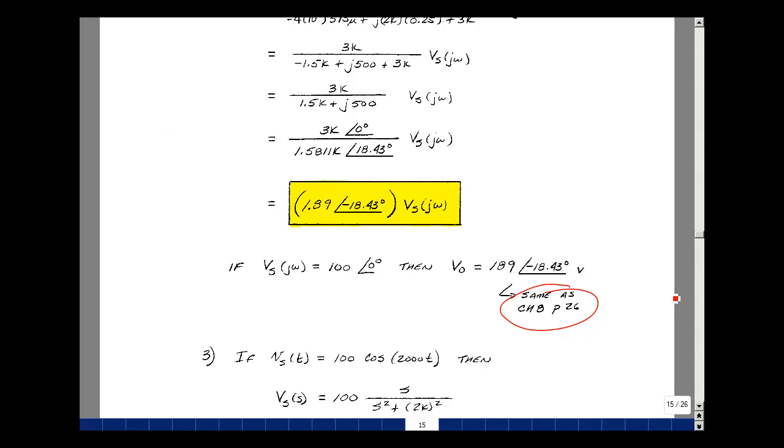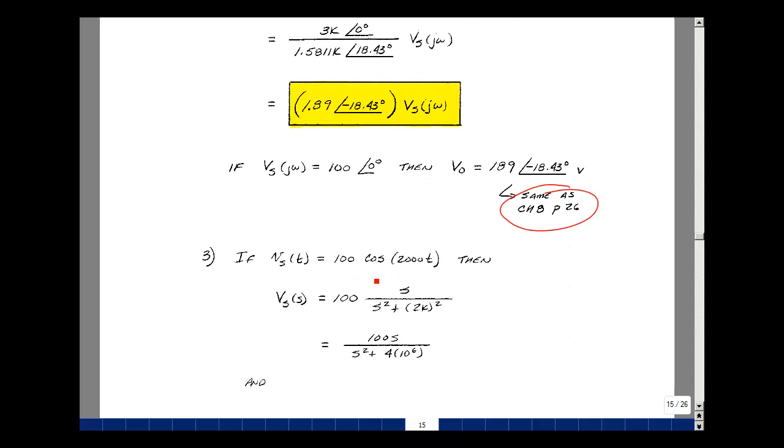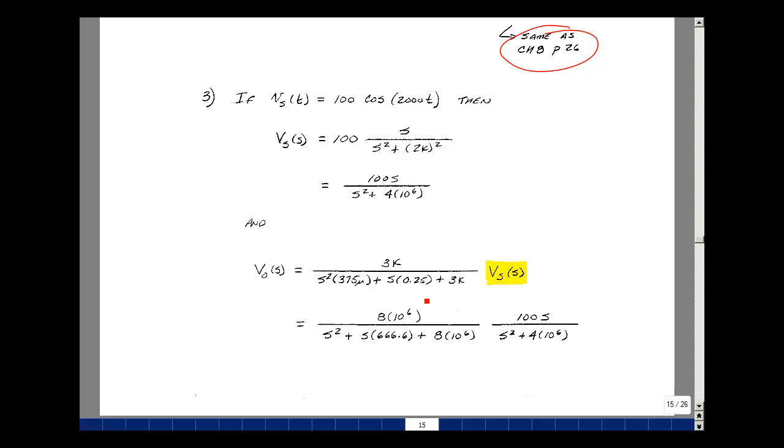The third task was to let V sub S be 100 times the cosine of omega T, where omega was 2000. Taking the Laplace transform, we have 100, and the Laplace transform of cosine of beta T from our table in chapter 9 page 13 is S over S squared plus beta squared, beta being 2000. So 100S divided by S squared plus 4 times 10 to the sixth. We're going to multiply that by V sub S of S. This is our result in the S domain.